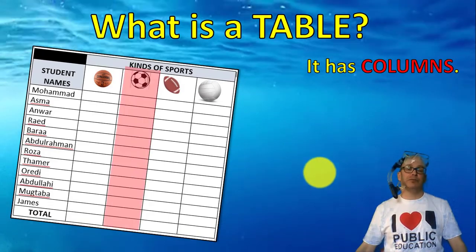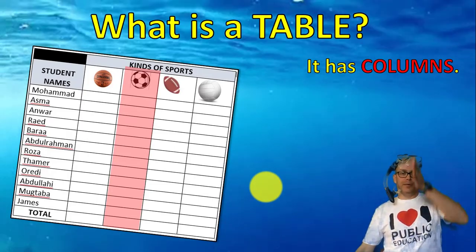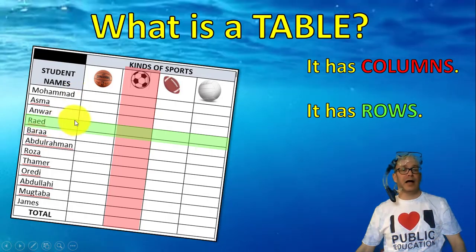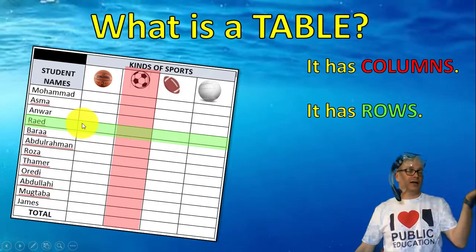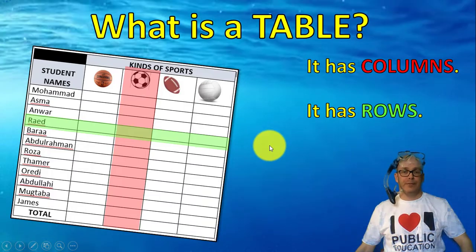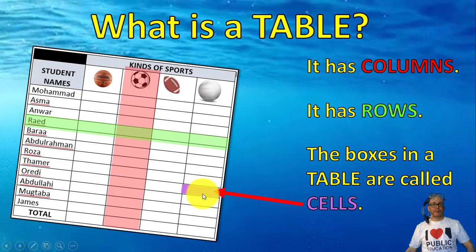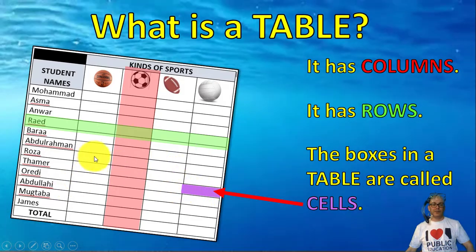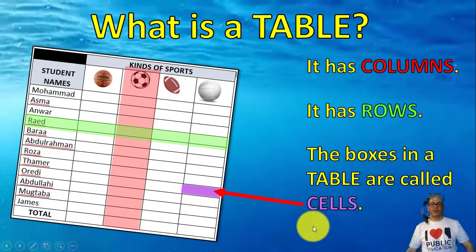A table has columns. Columns go up and down. And it has rows. Rows go side to side. Tables have boxes, and there are many, many boxes here. The boxes in a table are called cells.